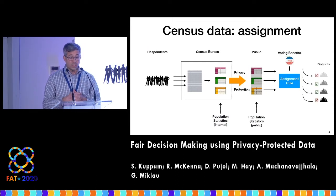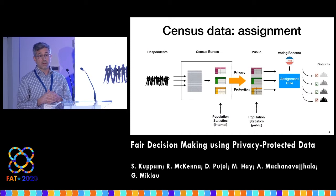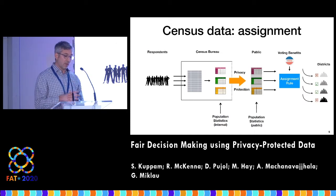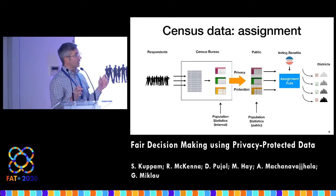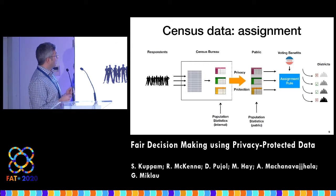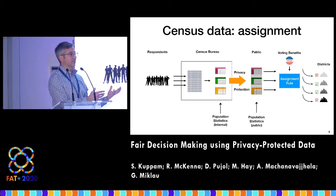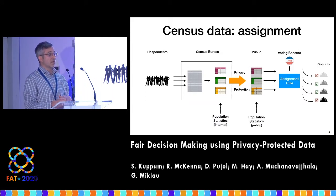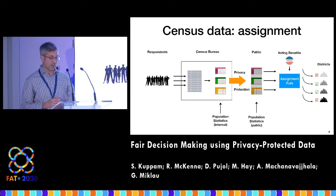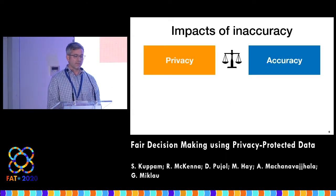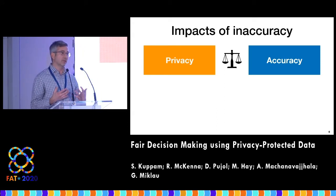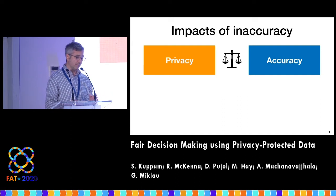Another example is voting rights benefits. In the US, there are laws that protect so-called minority language groups, and there's a threshold test: if there are enough speakers of that language in a voting district, they qualify for benefits, which basically involve publishing voting materials in that language so that voters are not disenfranchised. There's a difficult balance between privacy and accuracy, and inaccuracy in these population counts can have serious impacts.